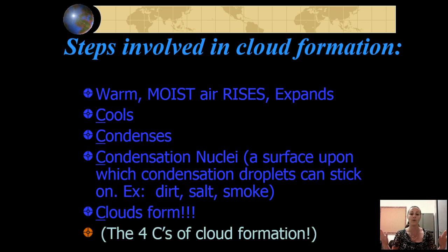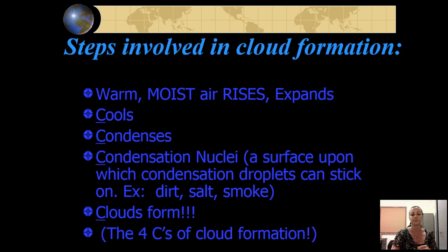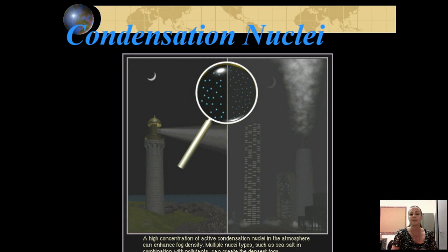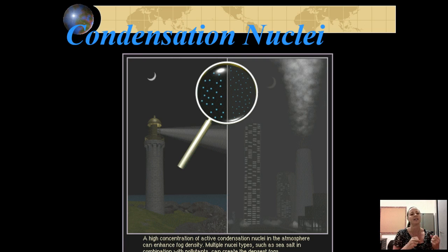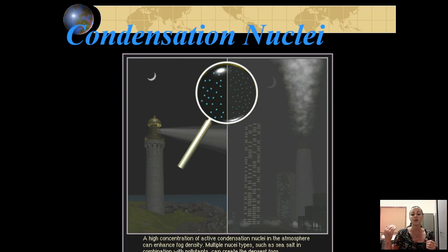Finally a cloud will form — and those are our four C's of cloud formation. When you're out in the country there's less condensation nuclei, with higher concentrations of naturally occurring substances like salt particles pulled into the atmosphere. When you're closer to a city with more pollutants, you have more condensation nuclei, and that's where you'll see things like smog or fog over the cities.